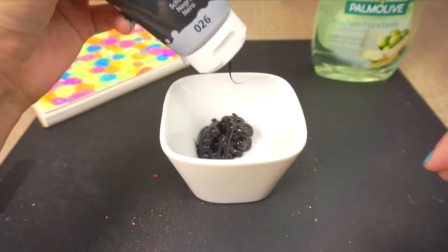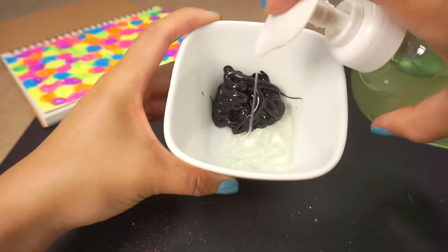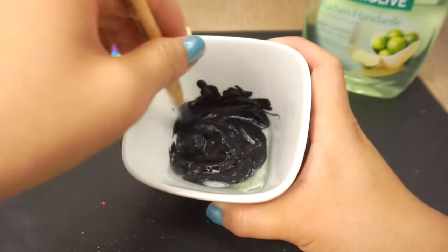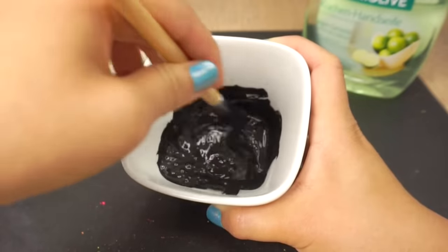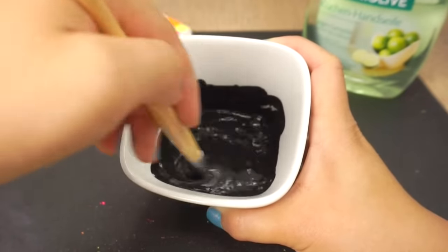For the next step mix equal parts of black acrylic paint and liquid soap together. You can also use shampoo, dish soap or any type of clear shower gel. This actually gives your notebook a nice scent so pick a smell that you like.